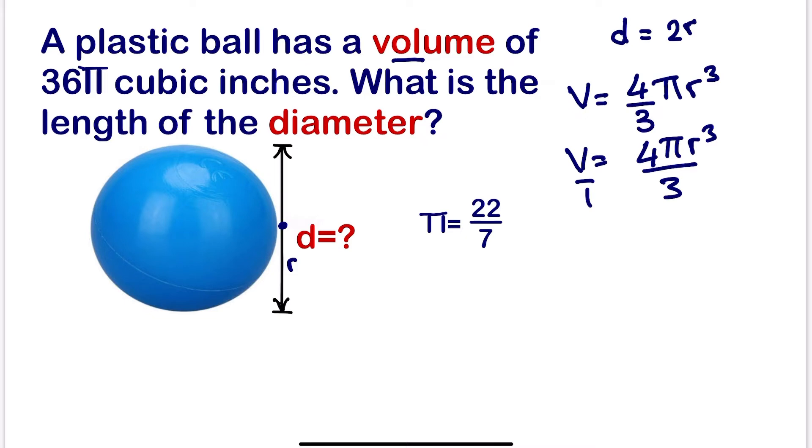If we cross multiply, we can cross multiply this times this and this times this. So we are going to have 1 times 4πr³ will be 4πr³.